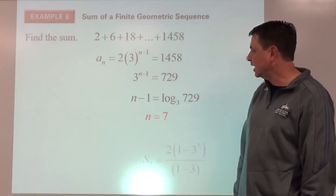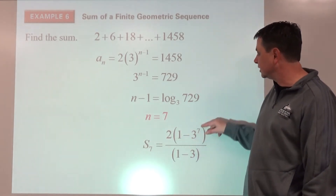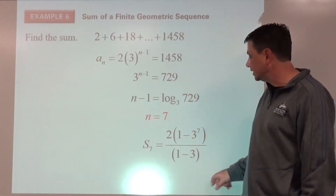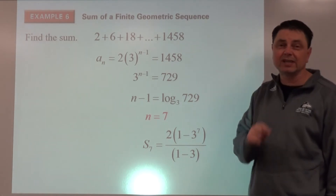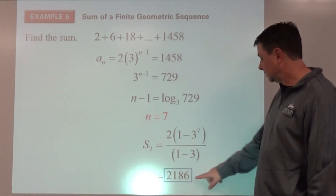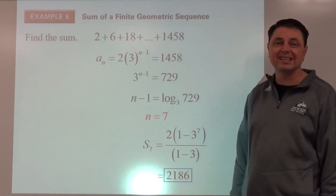S-sub-7 equals 2 times one minus 3 to the seventh, divided by one minus 3. You should be able to type that in and get 2186.